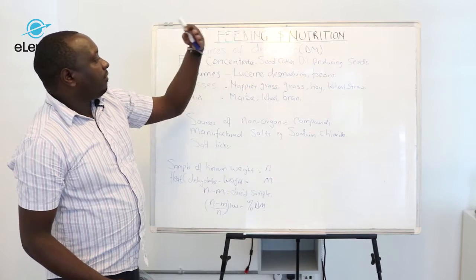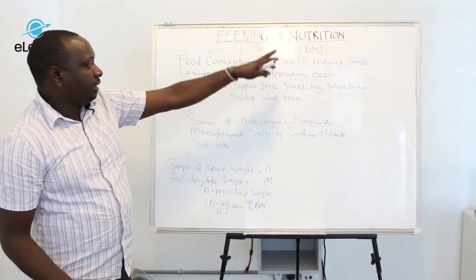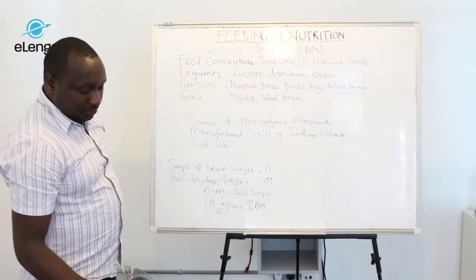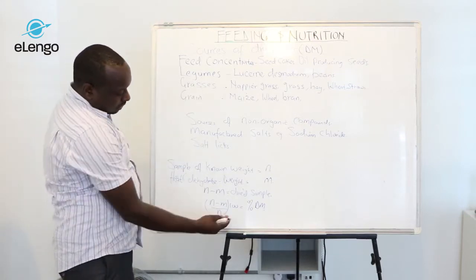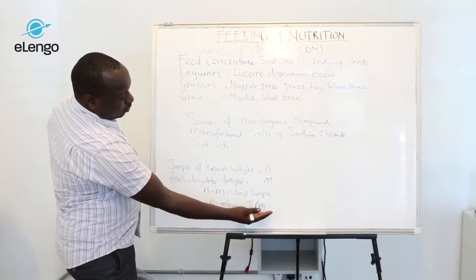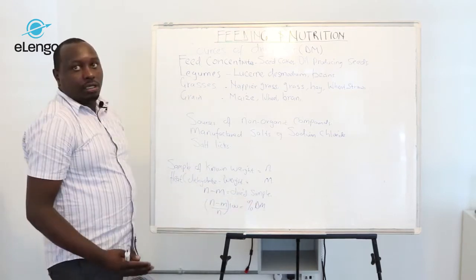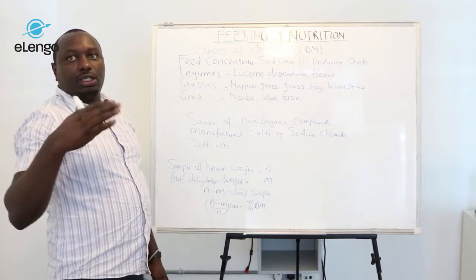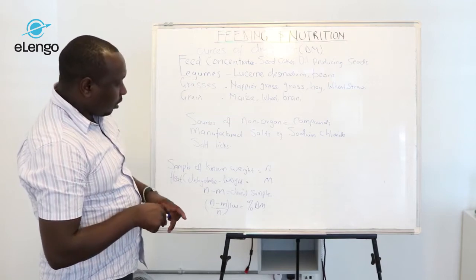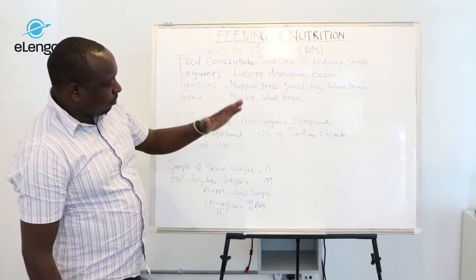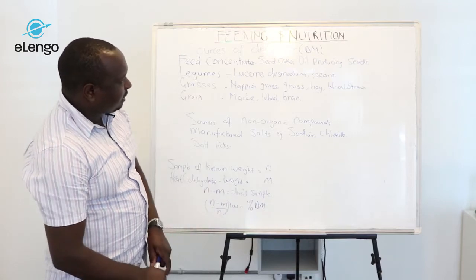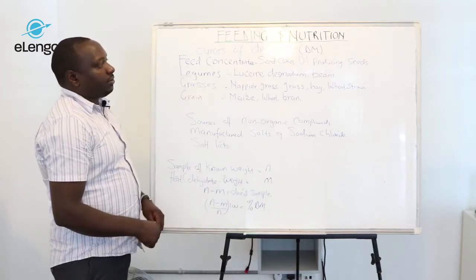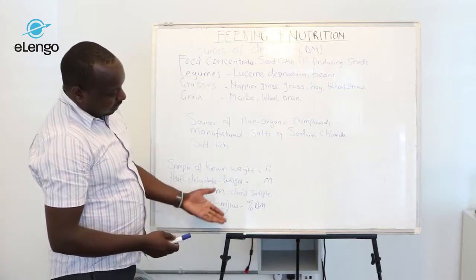This dry matter is what we feed. From this dry matter, we have organic compounds such as proteins, vitamins, and carbohydrates, and inorganic compounds such as zinc and copper.